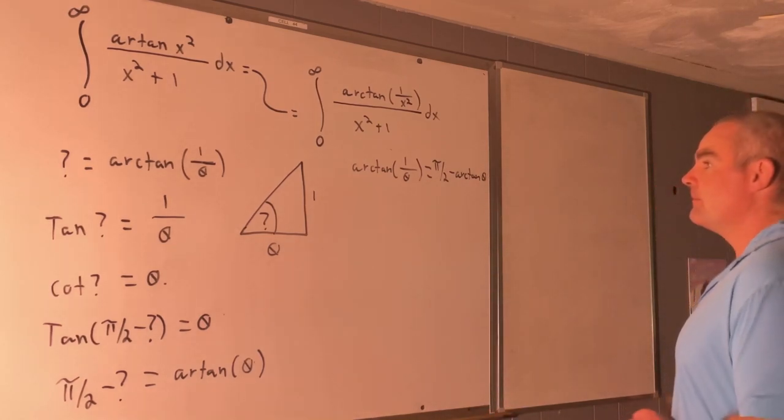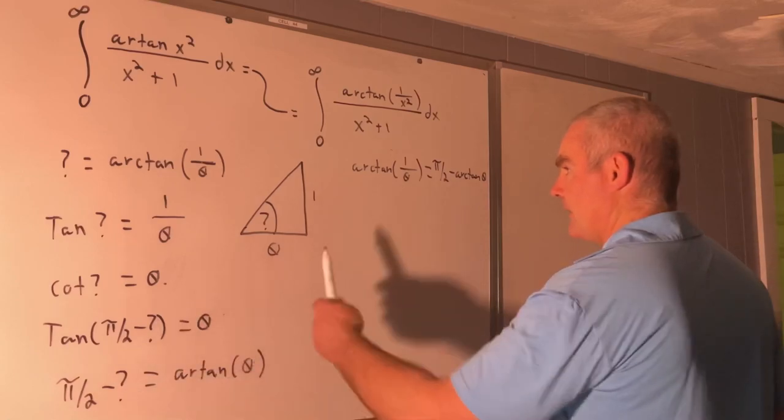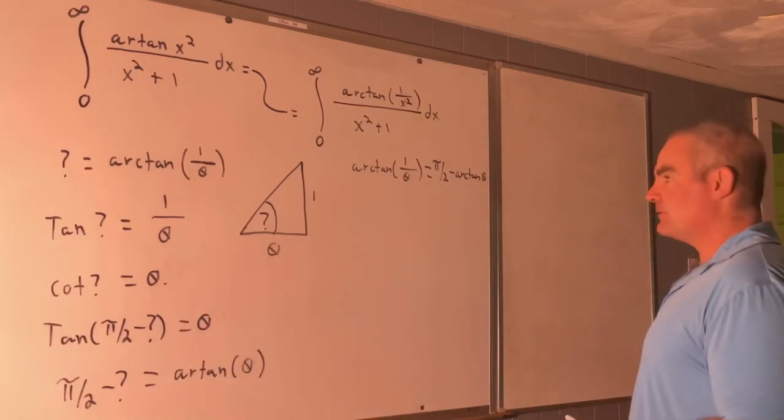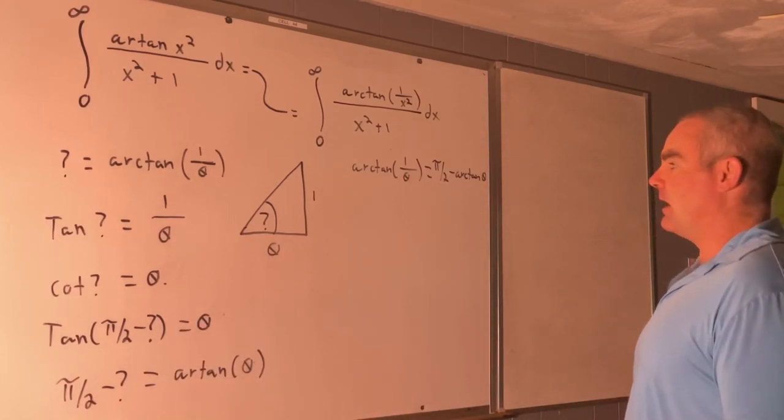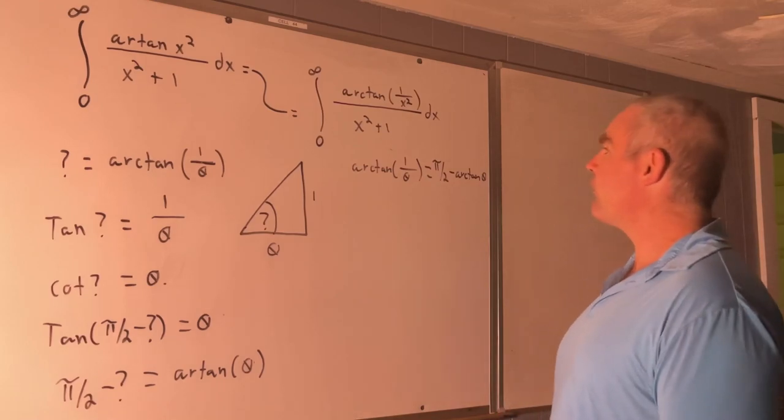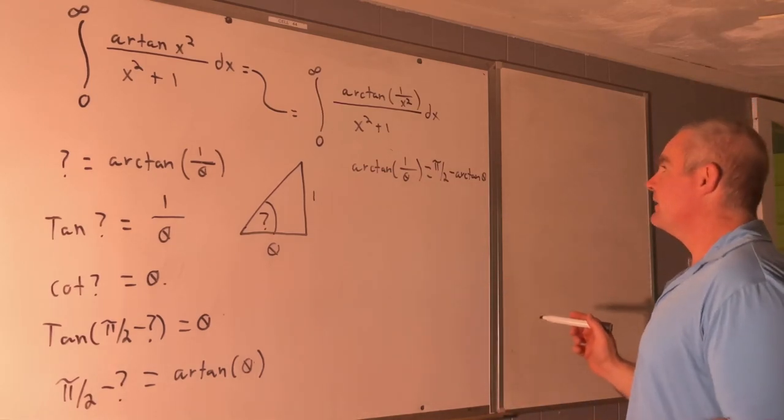Pi over 2 minus arc tangent theta. Alright, so that's kind of a neat trig identity right there. So from that, let's continue.